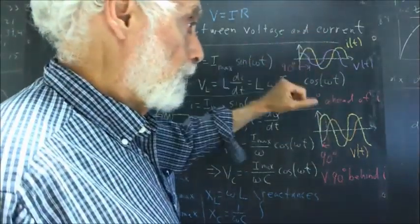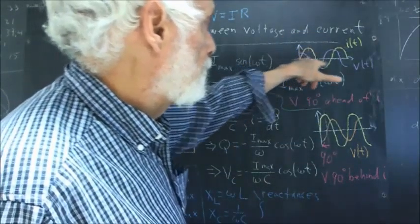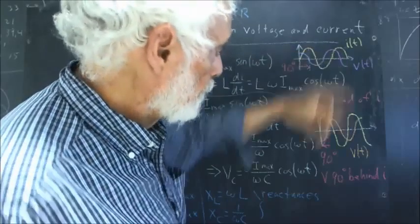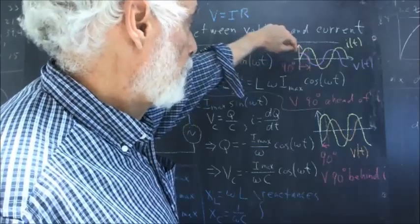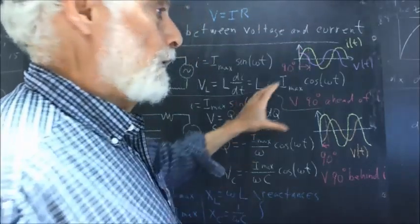The phase relationships are going to be the same, but the I of t is not going to be a sine. It's going to be a cosine and the same here. The 90-degree phase relationship is still going to be the same.